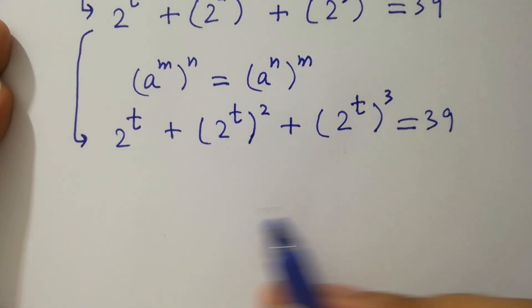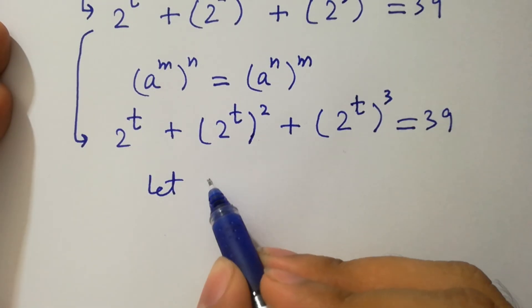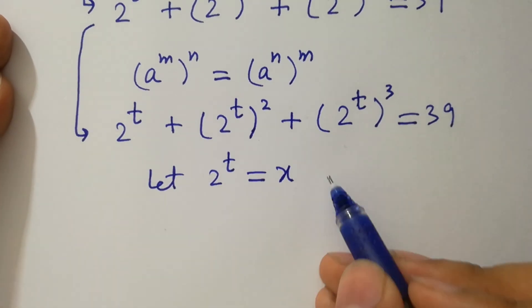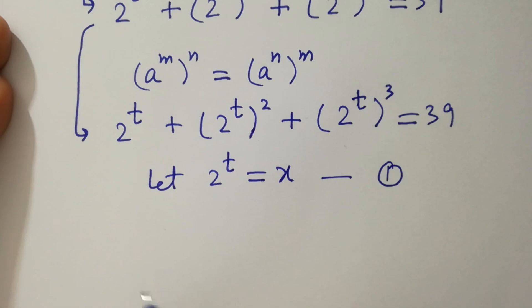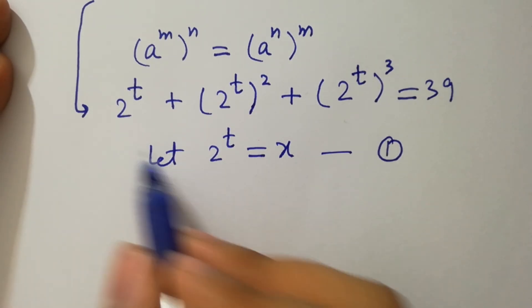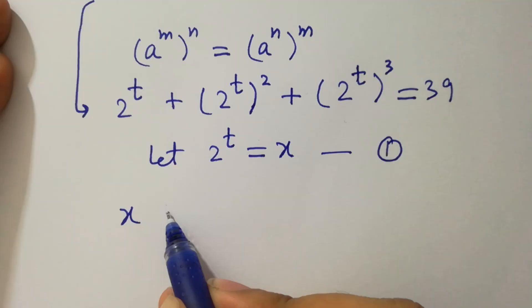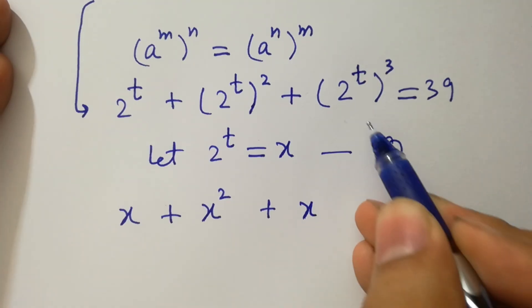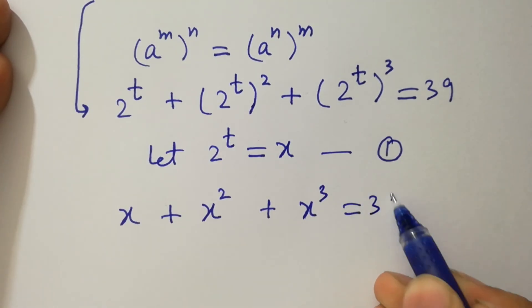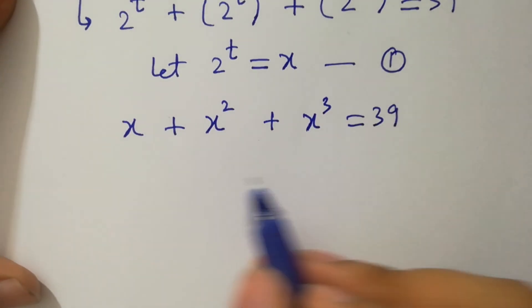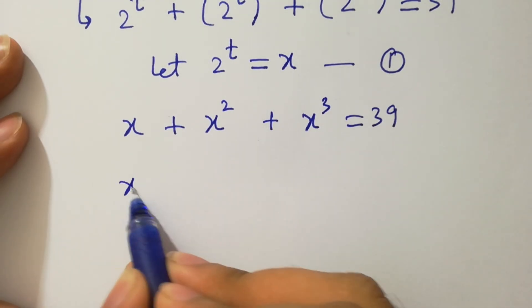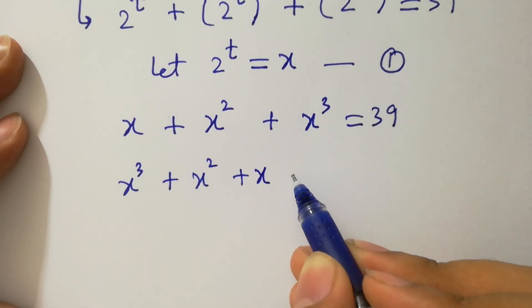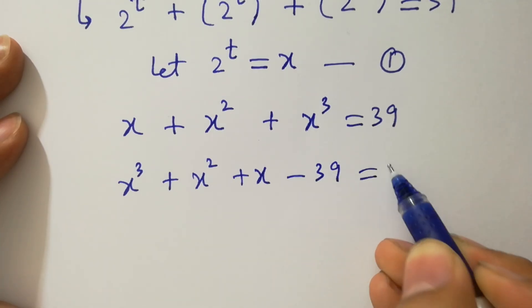Let's suppose that 2 to the power t equals x — this is our first equation. We then have x plus x squared plus x cubed equal to 39.